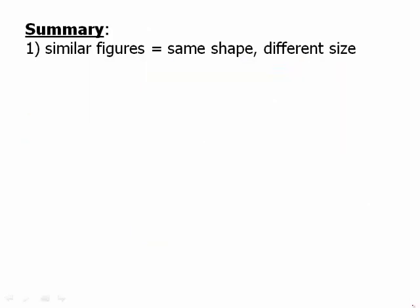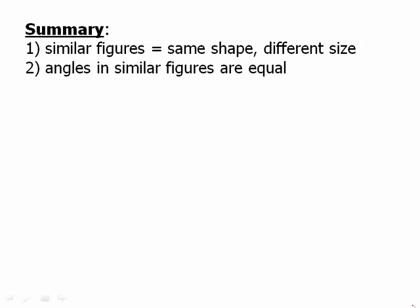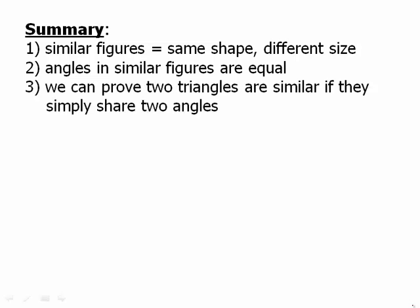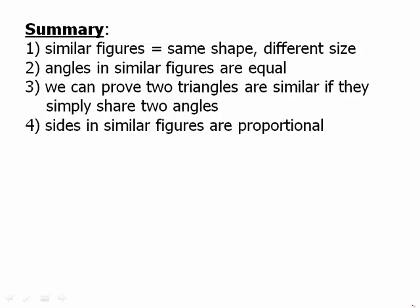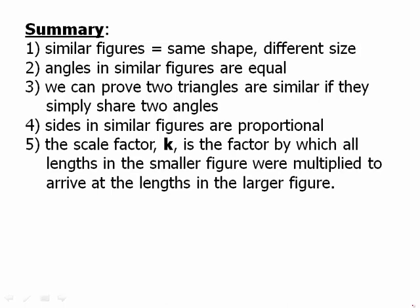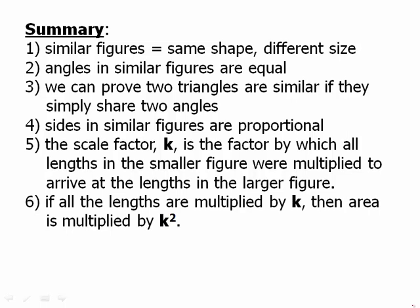In summary: similar figures have the same shape but different sizes — they're like expanded or shrunken versions of the same shape. The angles in similar figures are always equal. We can prove two triangles are similar if they simply share two angles. Sides in similar figures are proportional, and there are a number of ways to set up those proportions. The scale factor K is the factor by which all lengths in the smaller figure are multiplied to arrive at the lengths in the larger figure. Finally, if all lengths are multiplied by K, the area is multiplied by K squared.